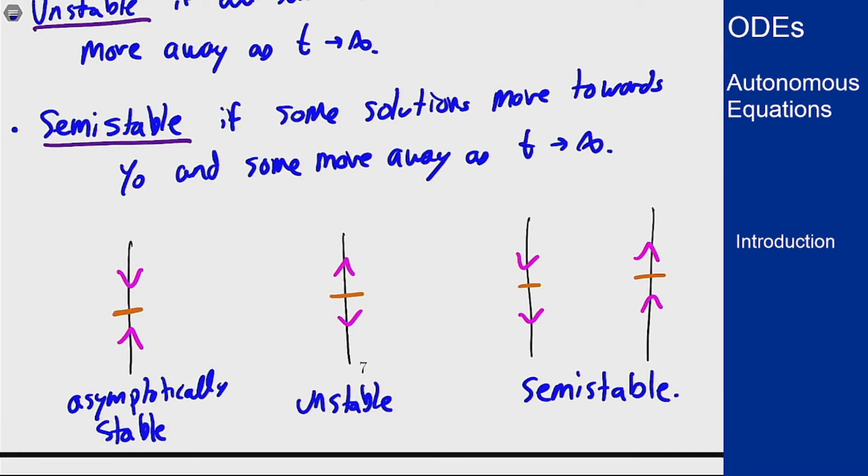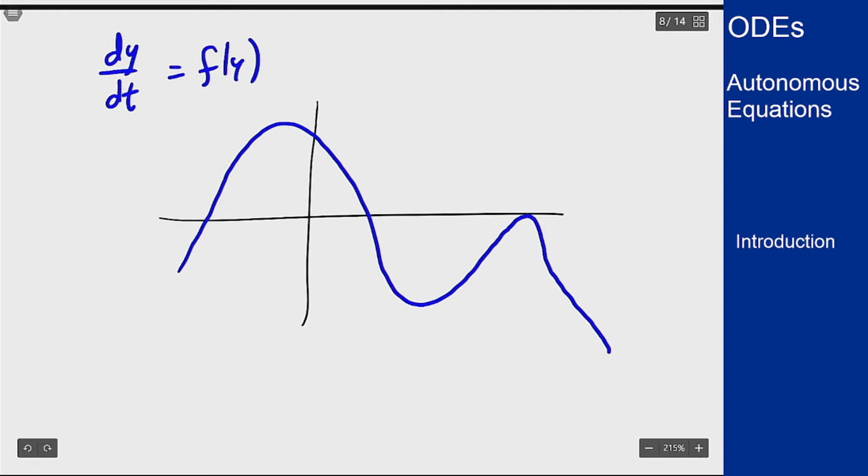What about in terms of the actual function f itself? So if we're solving the equation dy/dt equals f(y), I can draw a graph of what f(y) might look like. Let's say that's f(y). My equilibrium solutions are f(y) equals zero, so I can plot those three here on the graph. And now what do we see?